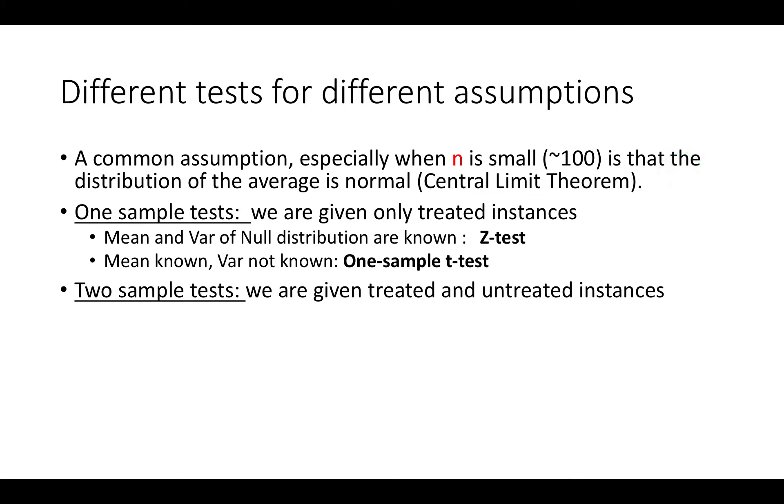In two sample t-tests we're given two sets, one treated and one untreated, and so in that case we don't assume that we know what is the mean of the untreated, but we estimate that too. So the null hypothesis here is that the means are equal, we're not saying what they are just that they're equal.